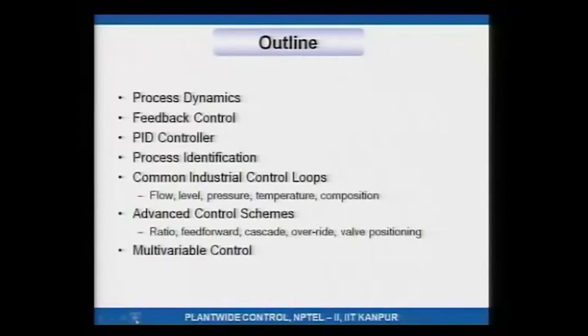Since the focus of this course is practical industrial application, we are also going to look at a few common industrial systems with control loops. These loops are typically flows, levels, pressure, temperatures, and composition loops — how do you tune them, what are the typical characteristics of these loops, and so on. Then we will also look at a few advanced control schemes such as ratio, feed forward, cascade, override, valve positioning, and optimizing control, which are routinely employed in industrial systems in order to achieve more effective control.